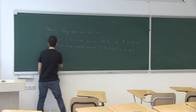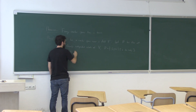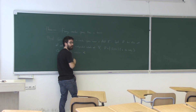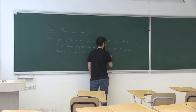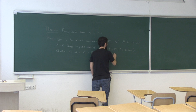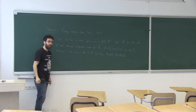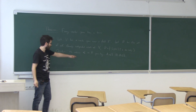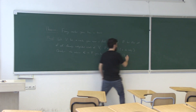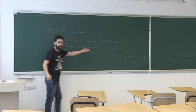Now consider the following relation: A ≤ B if and only if A is a subset of B. So I order elements of P by inclusion. You can check that this is a partial order relation — this is just by properties of the subset relation.